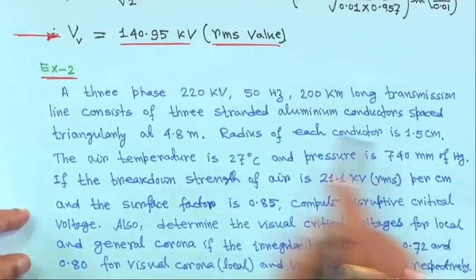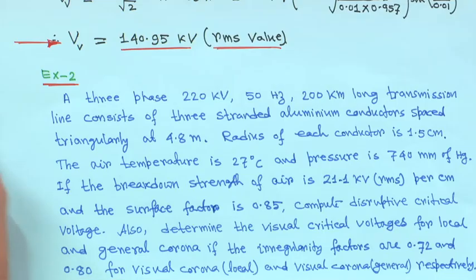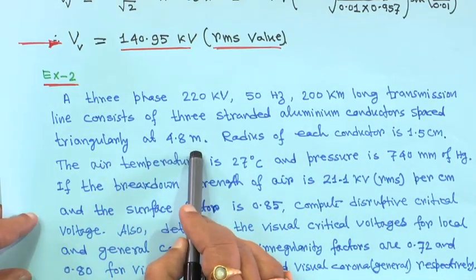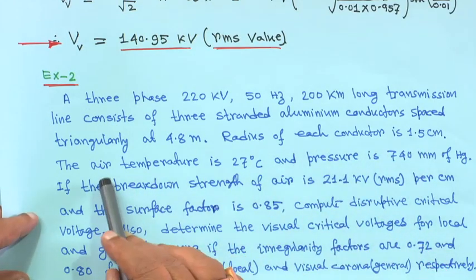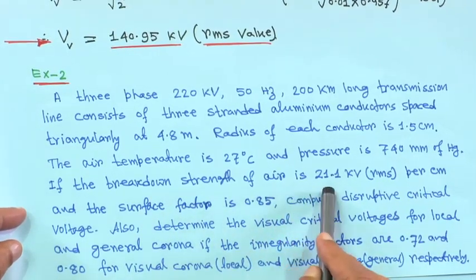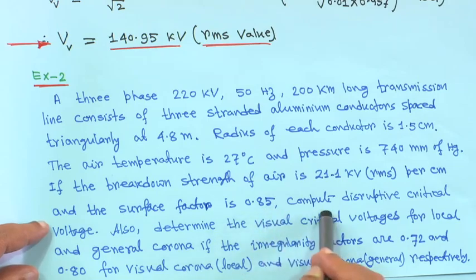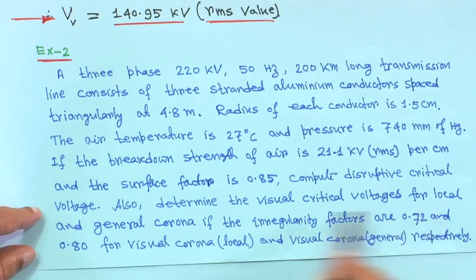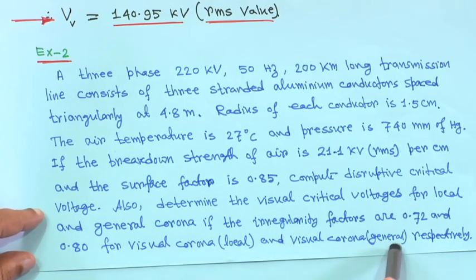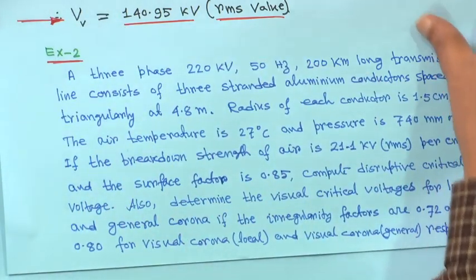Example 2: A 3-phase, 220 kV, 50 Hz, 200 km long transmission line consists of 3 stranded aluminum conductors spaced triangularly at 4.8 m. Radius of each conductor = 1.5 cm. Air temperature = 27°C, pressure = 740 mmHg. Breakdown strength of air = 21.1 kV RMS/cm. Surface factor = 0.85. Compute the disruptive critical voltage and determine the visual critical voltages for local and general corona, given irregularity factors of 0.72 and 0.8 respectively.